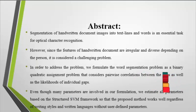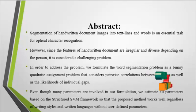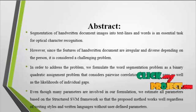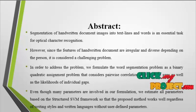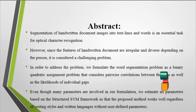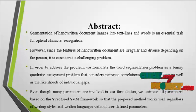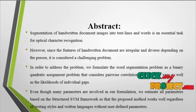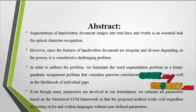Now we discuss the abstract for the process. Segmentation of handwritten document images into text lines and words is an essential task for optical character recognition (OCR). However, since the features of handwritten documents are irregular and diverse depending on the person, it is considered a challenging problem. In order to address the problem, we formulate the word segmentation problem as a binary quadratic assignment problem that considers pairwise correlations between the gaps as well as the likelihood of the individual gaps.